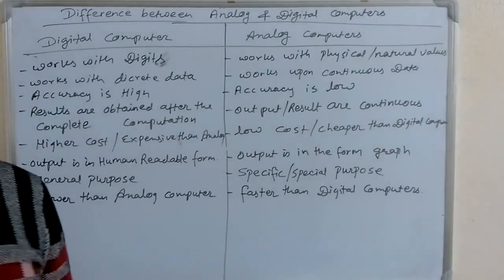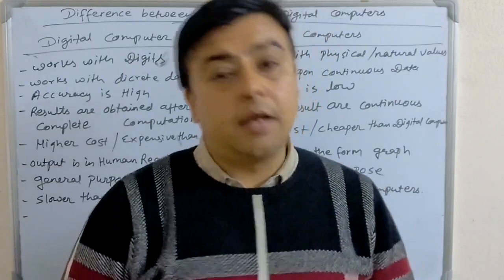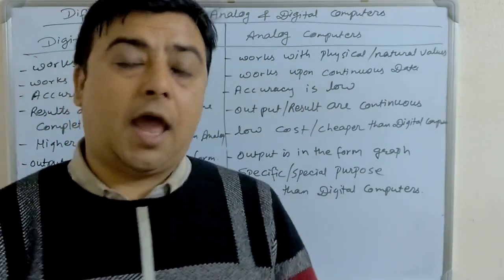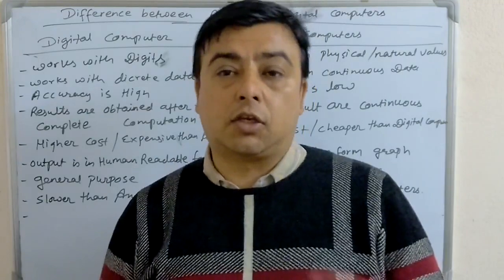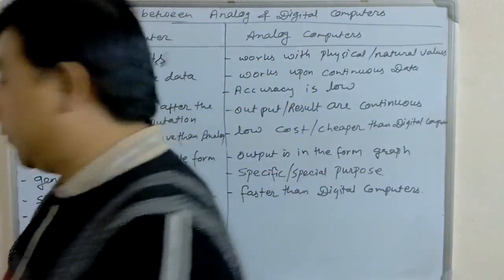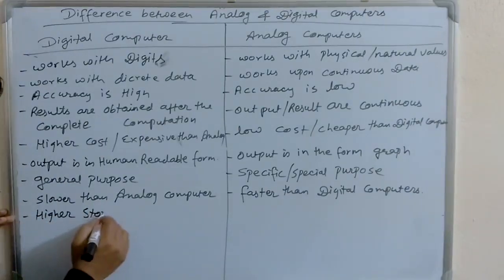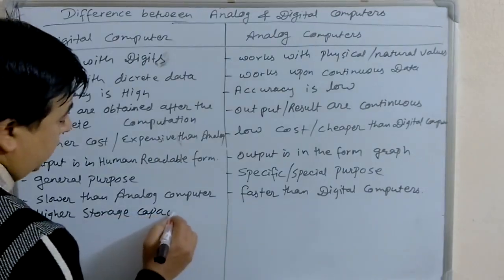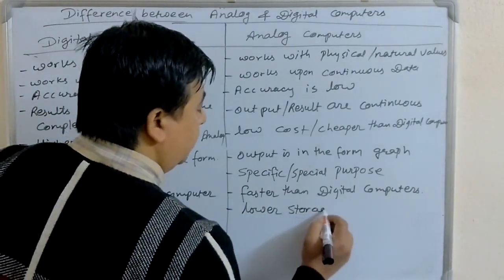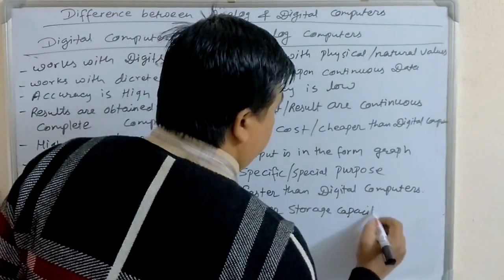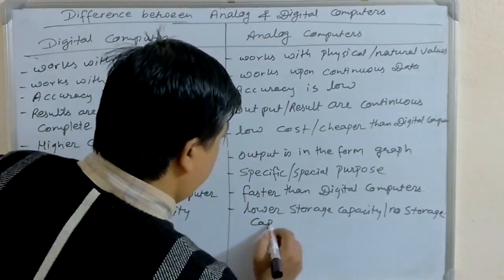The storage capacity of digital computers is higher than that of analog computers. Some analog computers have lower storage capacity, and some do not have any storage capacity at all.